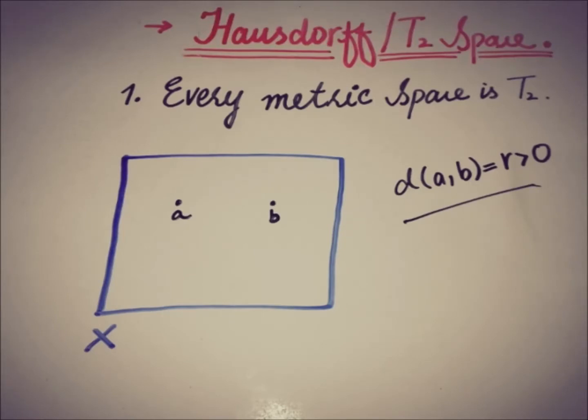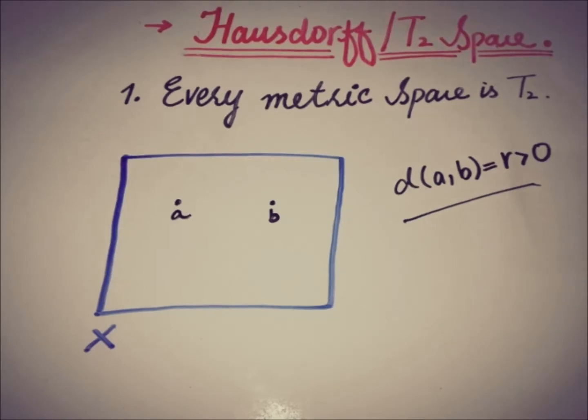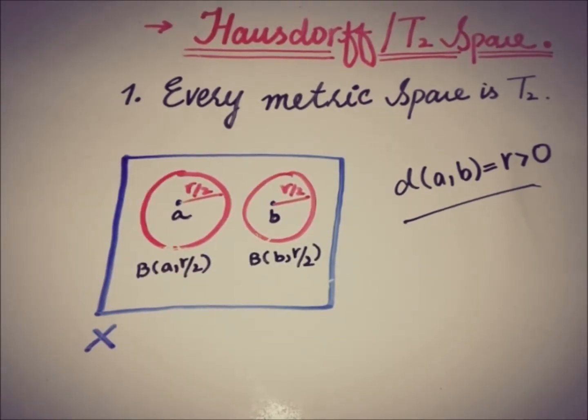We have a metric where D(A,B) is greater than zero, and if we define open balls centered at A and B of radius r/2, these open balls are distinct and are open sets, because we know that every open ball is an open set. This is the precise way of saying that every metric space is T2.